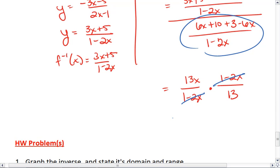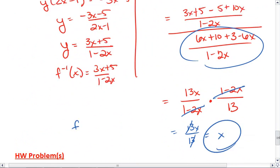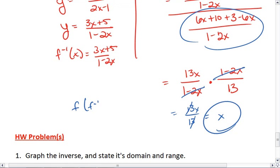The 1 minus 2x's cancel, leaving us with 13x over 13, and we are just left with x. So in fact, we do see that f of f inverse of x equals x.